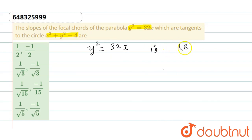The focal chord will pass through (8, 0). So the equation of the line is y = mx - 8m.